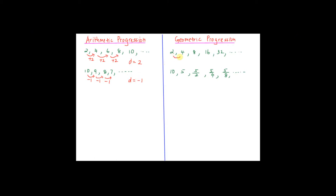You can see here if you multiply 2 from the previous term, you will get the next term. This is called a geometric progression, and r is called the common ratio, which is equal to 2 here. For the second sequence, you actually multiply half from the previous term. This is also a geometric progression with r less than 1, so r equals one half.